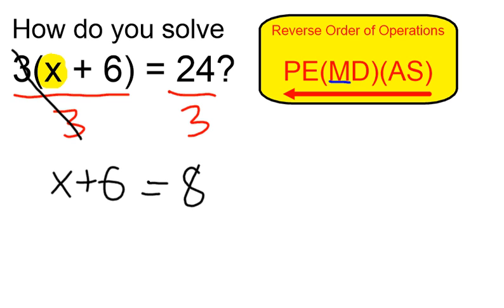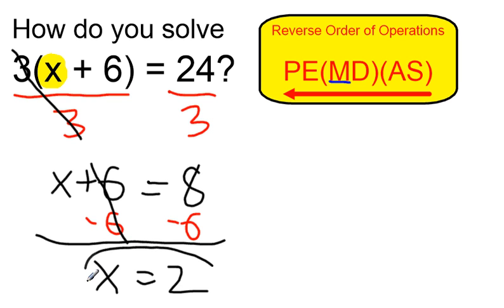At this stage it should be very obvious what x has to be, but to formally finish, we're going to subtract 6 on both sides, and x equals 2. 8 minus 6 is 2.